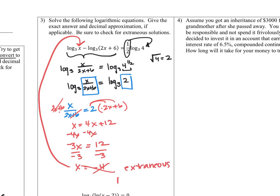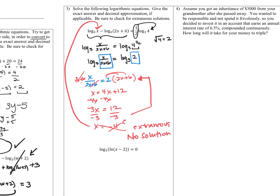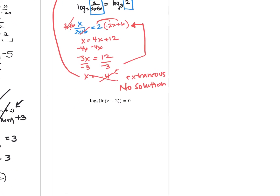So there is actually no solution here, since we only got one answer. The value x equals negative 4 does solve the rational equation we derived after eliminating the logs, but it's not a solution to the original log problem.